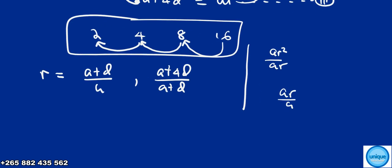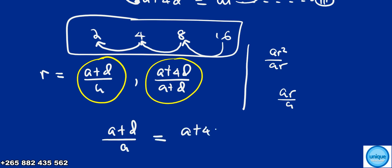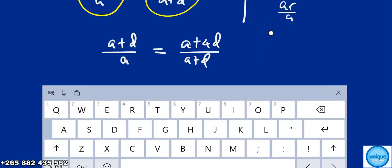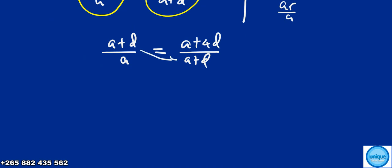Since r can be found either way, let's equate them: (a plus d) over a equals (a plus 4d) over (a plus d). Cross multiplying, we get (a plus d) times (a plus d) equals a times (a plus 4d).